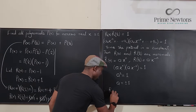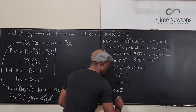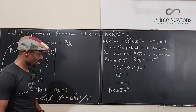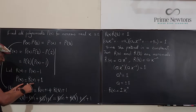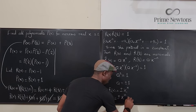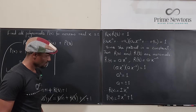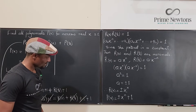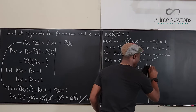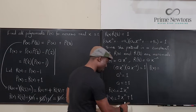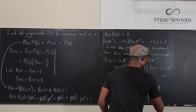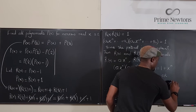Therefore R(x) = ±x^n. And since P(x) = R(x) + 1, we have that P(x) = ±x^n + 1. So P(x) = 1 + x^n, or P(x) = 1 − x^n.